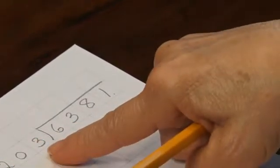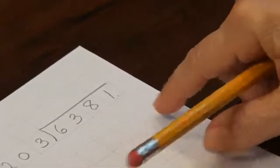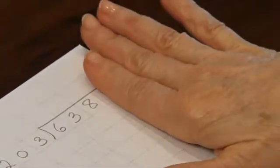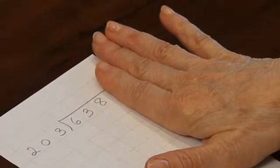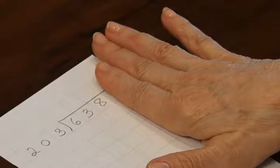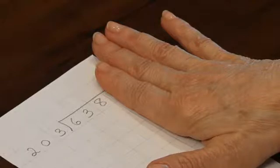And in group division I think, how many groups of 203 are there in 6,381? I'm going to start by just looking at the first three largest digits of the dividend and ask myself, how many groups of 203 are there in 638?